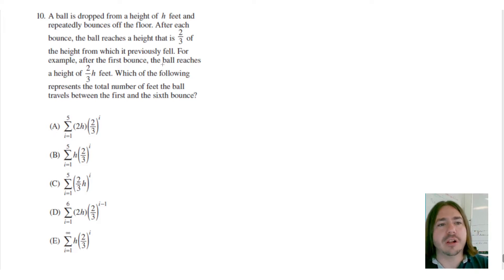It says a ball is dropped from a height of h feet and repeatedly bounces off the floor. After each bounce, the ball reaches a height that is two-thirds of the height from which it previously fell. For example, after the first bounce, the ball reaches a height of two-thirds h feet. Which of the following represents the total feet the ball travels between the first and the sixth bounce?